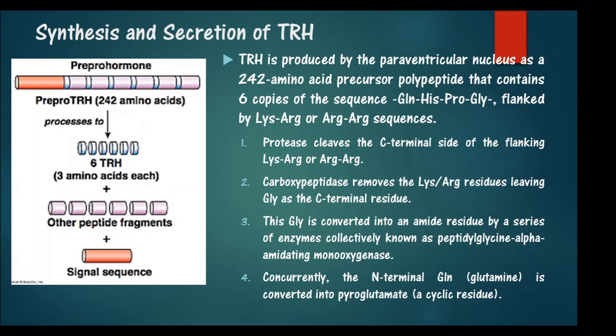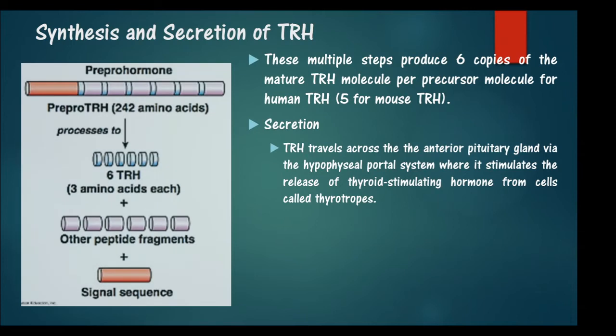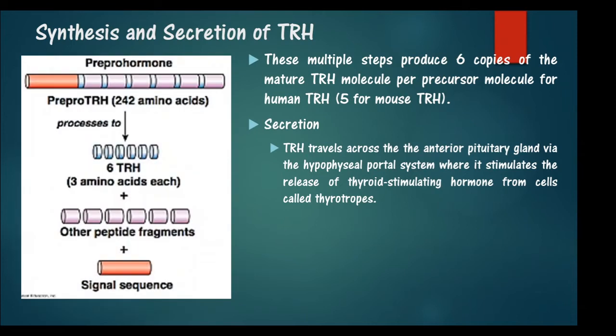The glycine is converted to an amide by peptidyl glycine alpha-amidating monooxygenase. Concurrently, the N-terminal glutamine is converted to pyroglutamine, making it a cyclic residue. The signal sequence and other peptide fragments are removed, yielding six TRH molecules from a single pre-prohormone (five copies in mice).